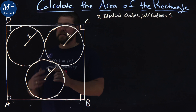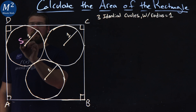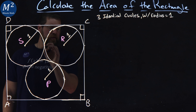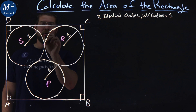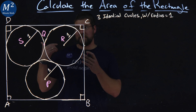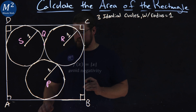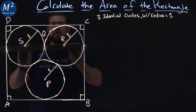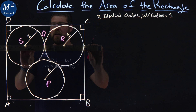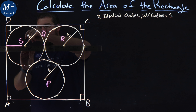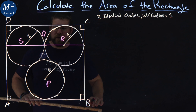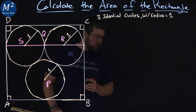First, I'm going to label some points. I'm going to call this first circle center S, the second one R, and this one P. And this little intersection that happens here, I'm going to call that Q. So let's draw some extra lines. I'm going to draw a line across that connects S, Q, and P, because they all go down the same amount.